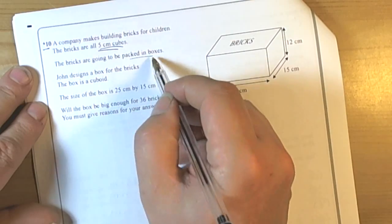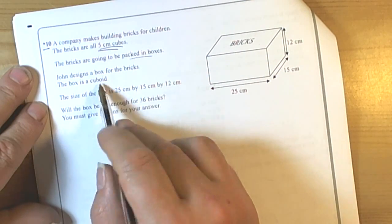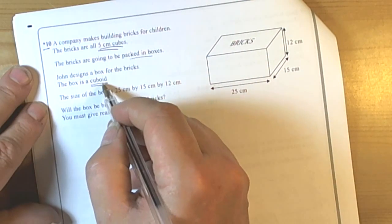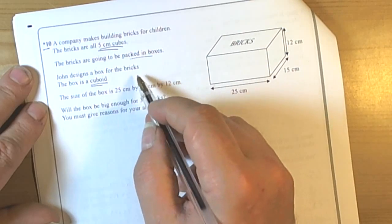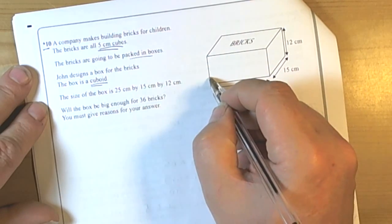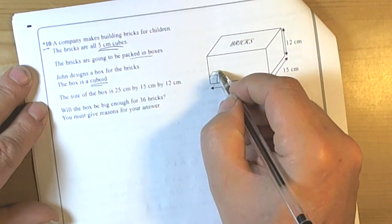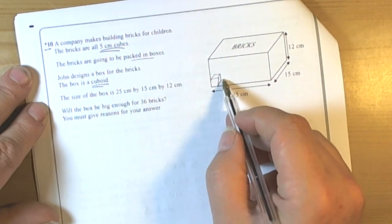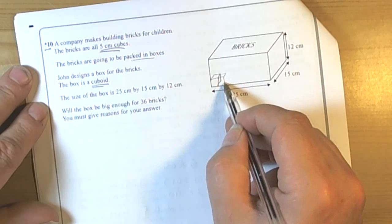The bricks are going to be packed into boxes, and the design of the boxes is a cuboid. So we see that word cuboid, we might be thinking of volume, or fitting them in along the sides. We can imagine what we're doing here - fitting cubes inside this box.